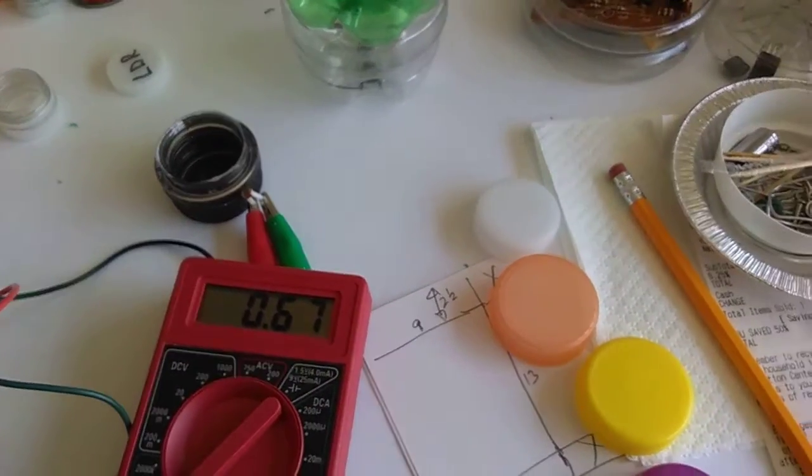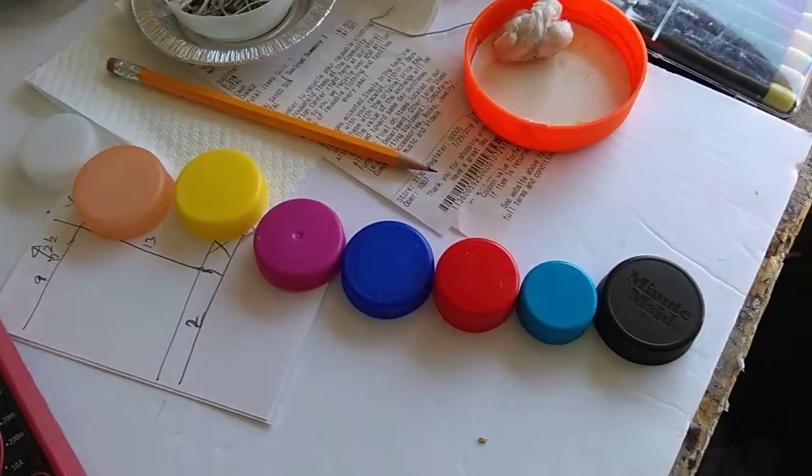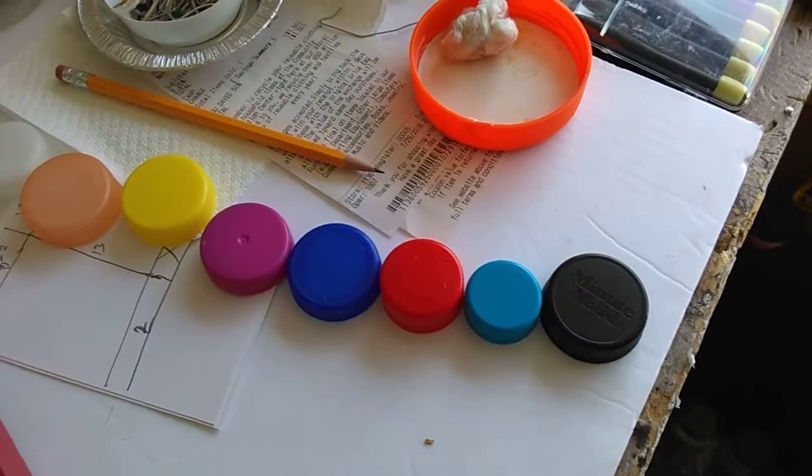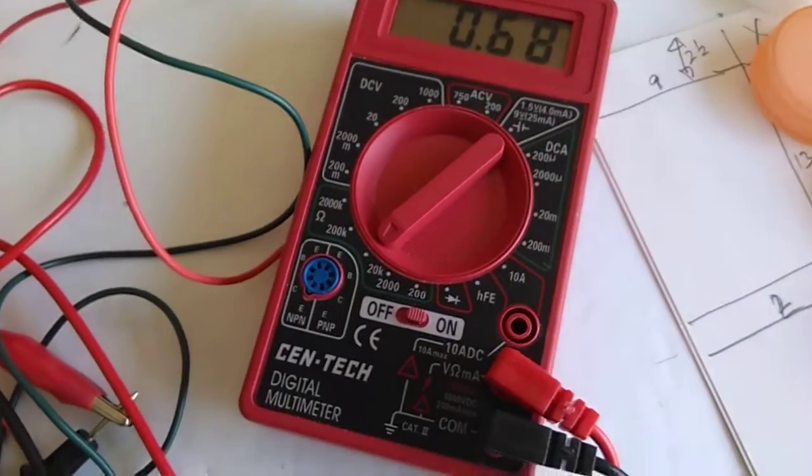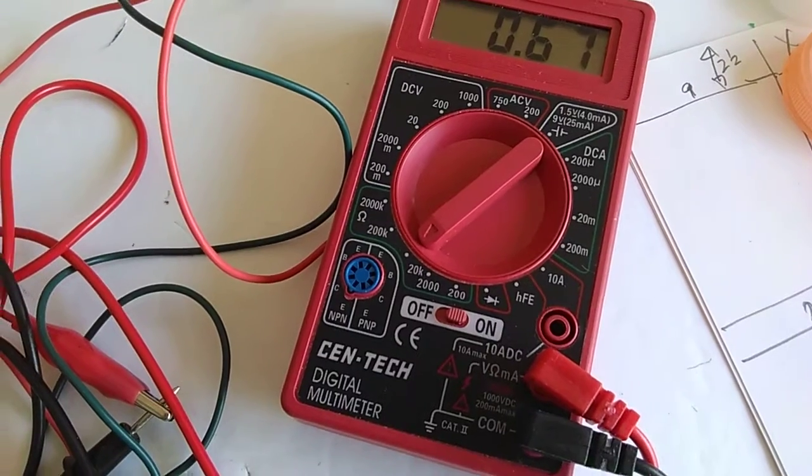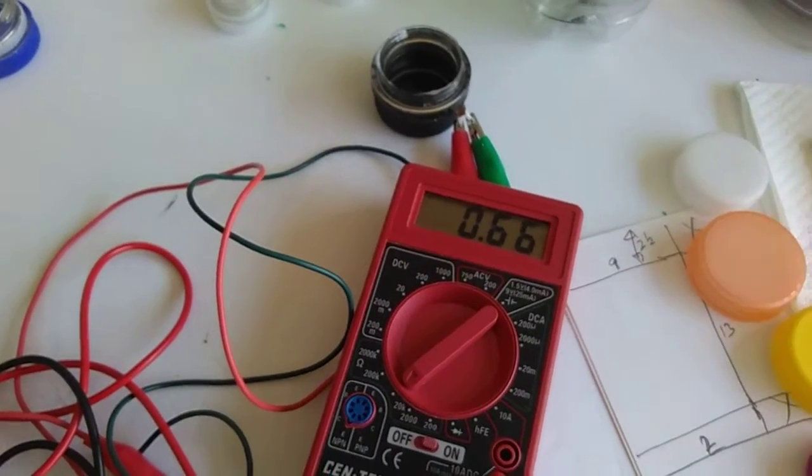All right, we're going to go through a series of bottle caps with different colors. And as we all see, when we get to the black one, that provides the most resistance. Now that is set, the resistor is set at 20K. So what you're looking at there is around 670 ohms.